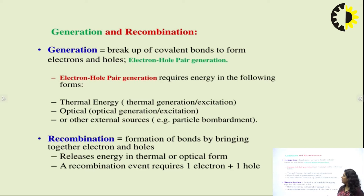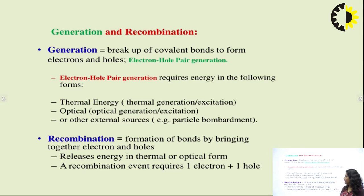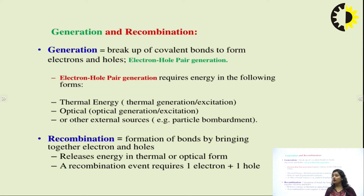There are also external sources by which we can generate electron and hole pair — if we are bombarding some particle onto the crystal lattice, the electron hole pair inside the crystal lattice will break up and there will be two separate entities: electrons and holes. Recombination, as the word suggests, means recombining both these entities — the electron and hole pair. Recombination is the formation of bonds by bringing together electrons and holes, and they combine to produce light, releasing energy in the thermal or optical form as hν, where E_g equals hν.